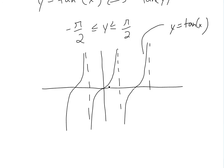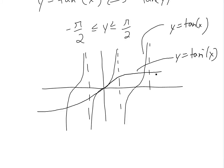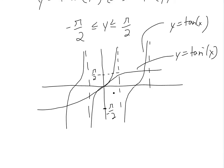For the inverse, remember it's a reflection over the y equals x line, so it's going to look something like this. This here is y equals inverse tan of x. We only invert a restricted portion of the function so that we don't have multiple values of y for every x. This restricted piece runs from negative π/2 to π/2.